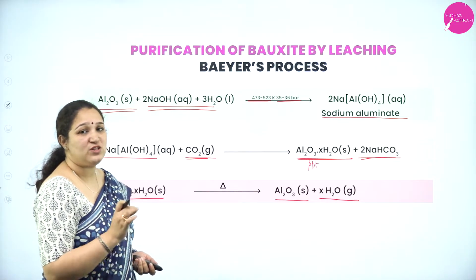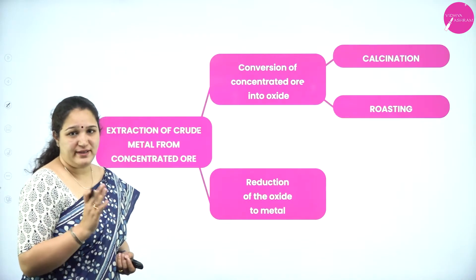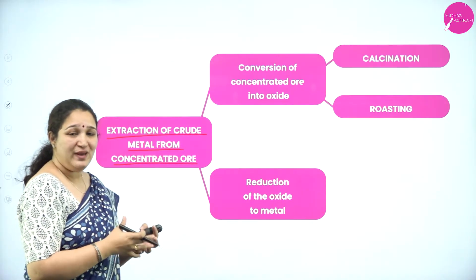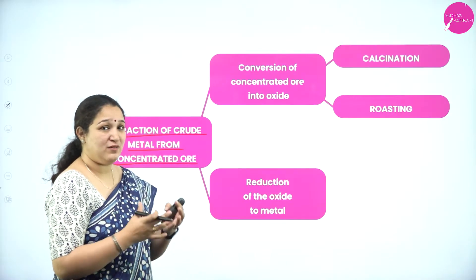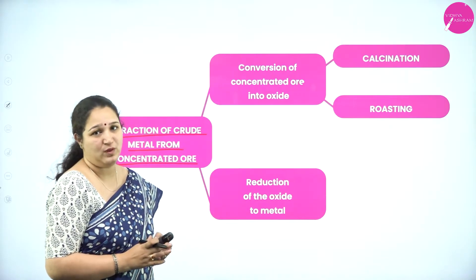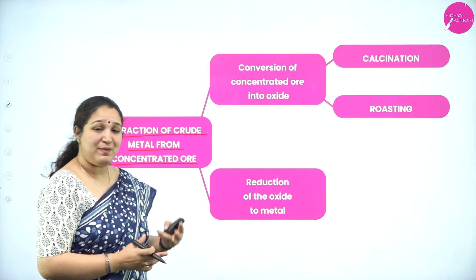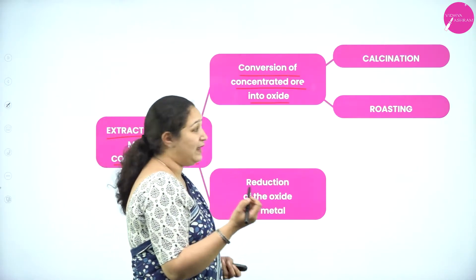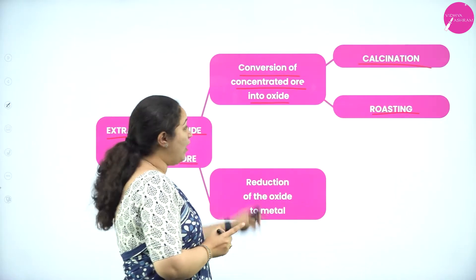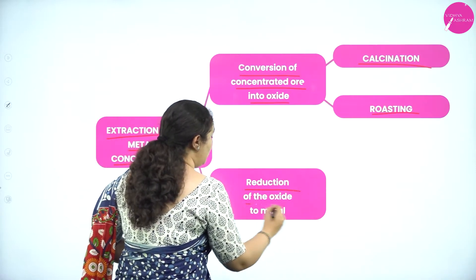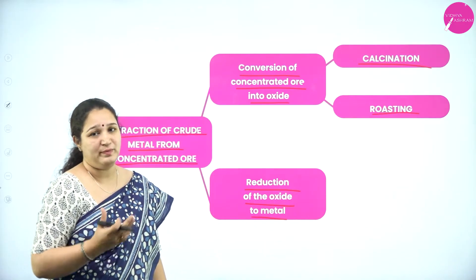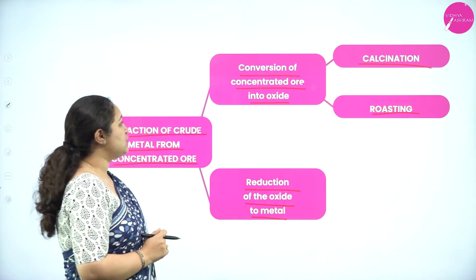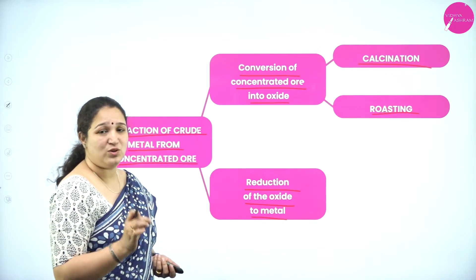Leaching is one method of concentration of the ore. Once the ore is concentrated, the next step is extraction of crude metal from the concentrated ore. This step involves two sub-steps: conversion of the concentrated ore to its oxide by calcination or roasting, followed by reduction of the oxide to the crude metal. After getting the crude metal, we do refining to get the purest form. First we will learn how to convert the concentrated ore to its oxide.